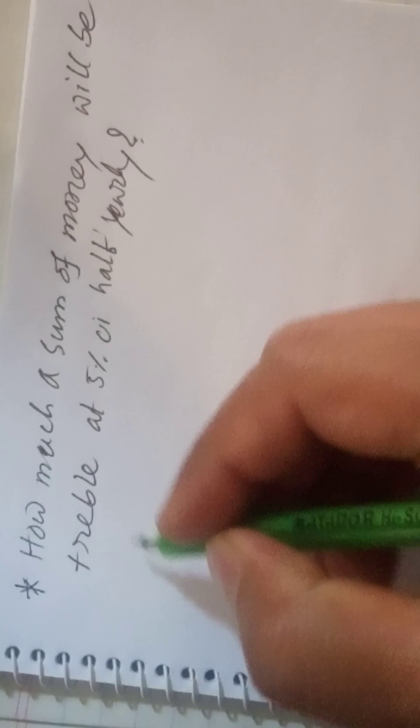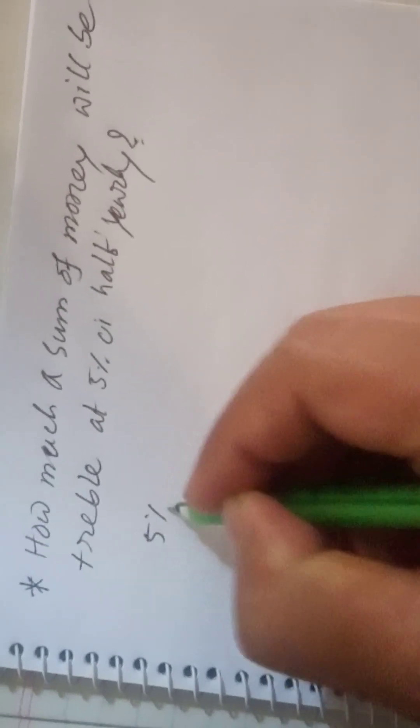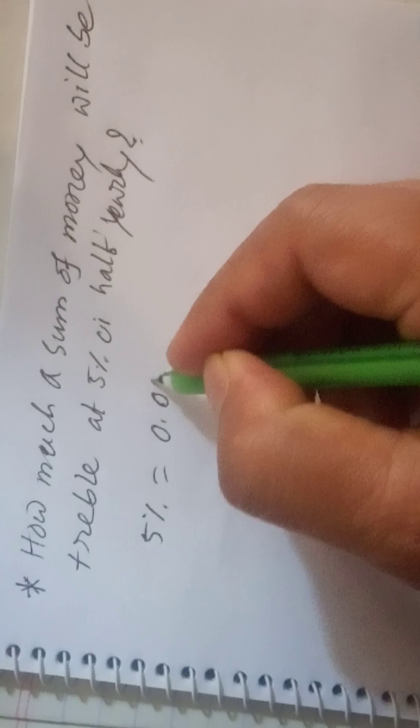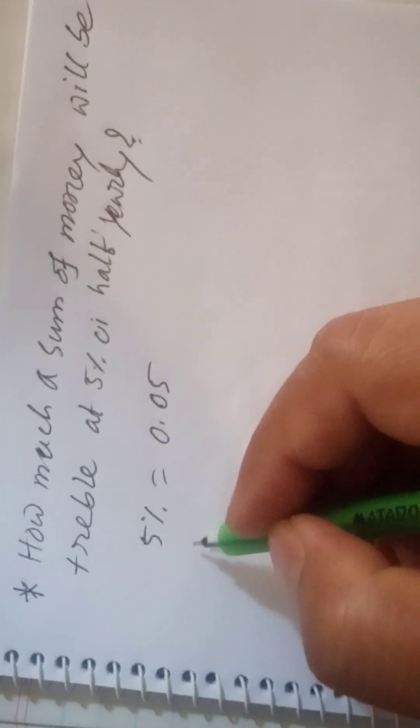In how much time will a sum of money triple at 5% compound interest half-yearly? So 5% equals 0.05.